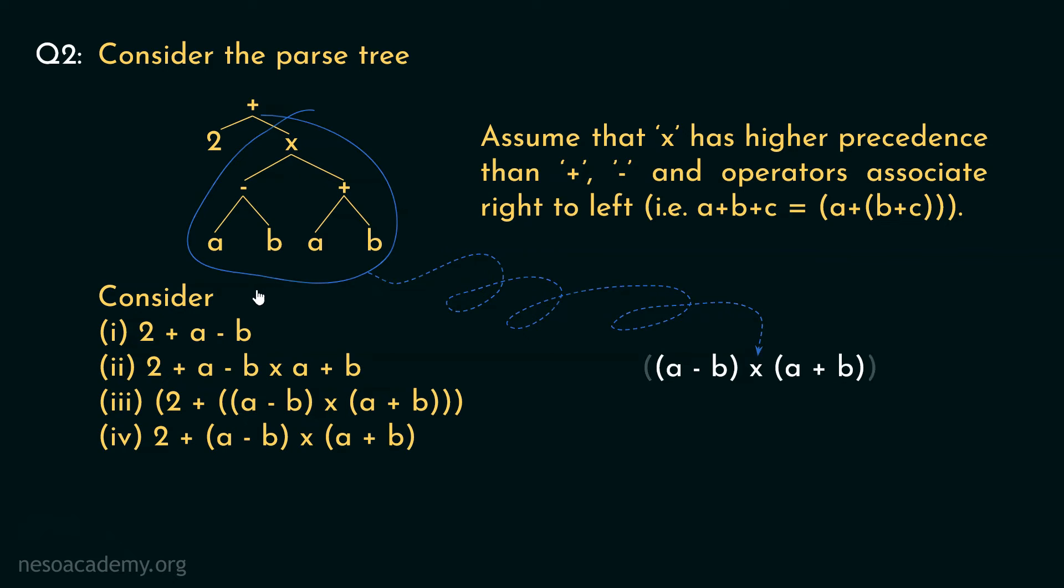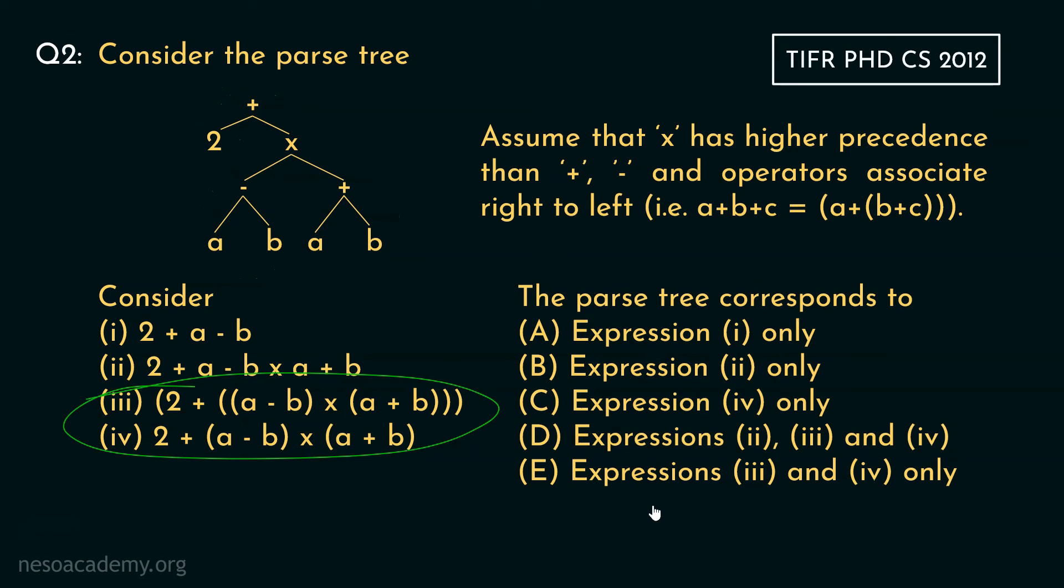Finally, the entire tree results in 2 plus A minus B into A plus B. Now, this expression is similar to these two expressions. See, the same. Here, we have the same expression with the proper brackets or, well, basically parenthesis. And in case of this one, we also have the same thing. Right? So, from all the five options, the option E, that is the expressions 3 and 4 only, is the correct choice.